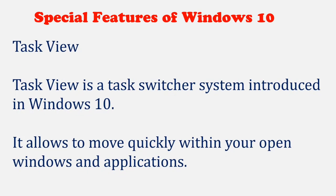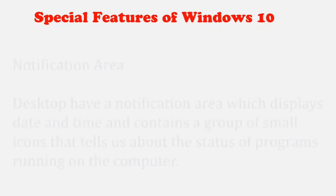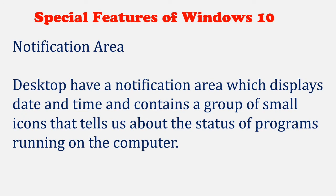Task View is a feature introduced in Windows 10. It allows you to move quickly within your open windows and applications. The Notification Area is another feature — the desktop has a notification area which displays date and time and contains a group of small icons that tell us about the status of programs running on the computer.